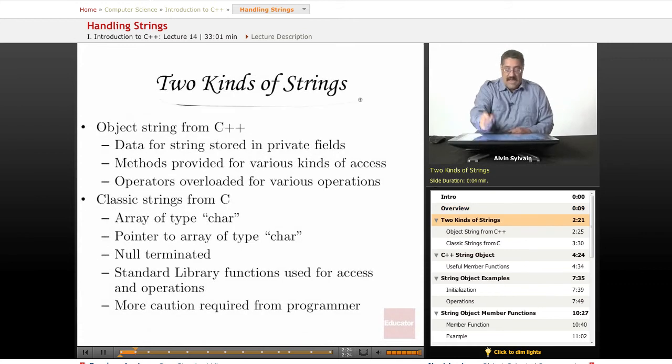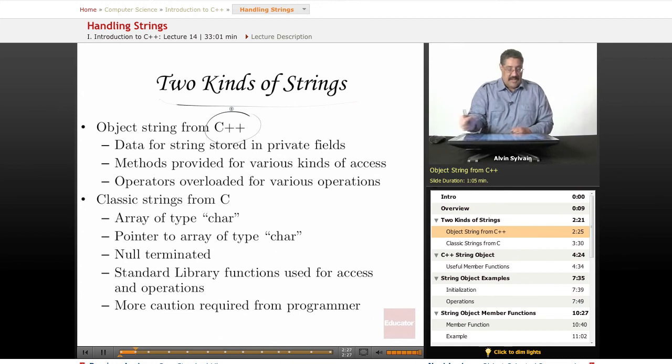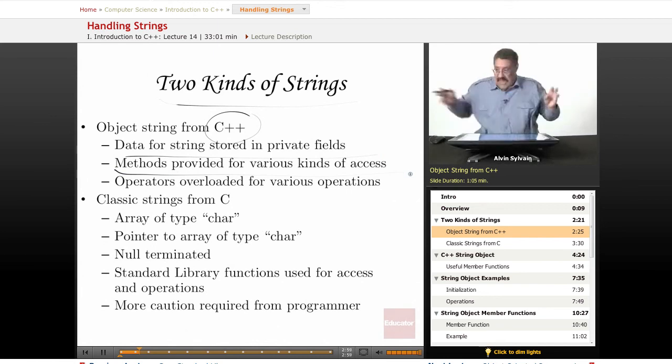So, we have two kinds of strings. The object string in C++, the data is stored in private fields. You don't know how the data for a character string is stored, and you're not supposed to know. Maybe you put some data here, a little bit more data there, and a whole bunch of space in it. It's allocated so that if it grows, it'll grow into that space and whatever. You don't know, you don't care. You just know it's in there. You don't have access to it. But there are methods to get that data out,